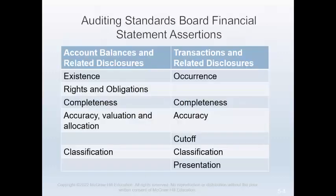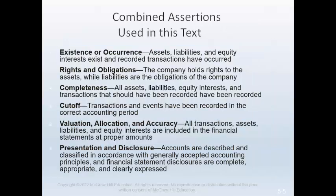This chart shows the financial statement assertions that the Auditing Standards Board and the International Standards have identified as relevant to accounts, transactions, and disclosures. All assertions do not apply to every account, transaction, or disclosure in every category at all times. For example, the existence and completeness assertions may always be relevant to the cash account, but valuation is not unless currency translation is involved. In designing audit procedures, auditors may use a condensed set of relevant assertions, provided all GAAP financial statement aspects are covered. The text combines some assertions as shown in this slide, which will be discussed in greater detail in Chapter 6.